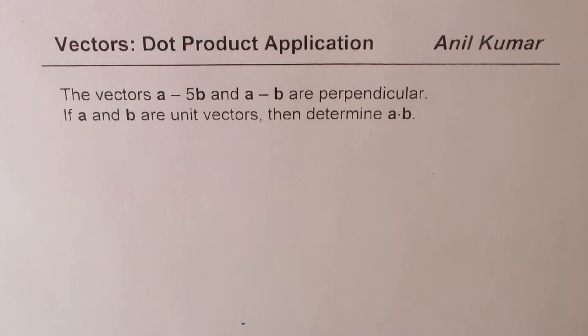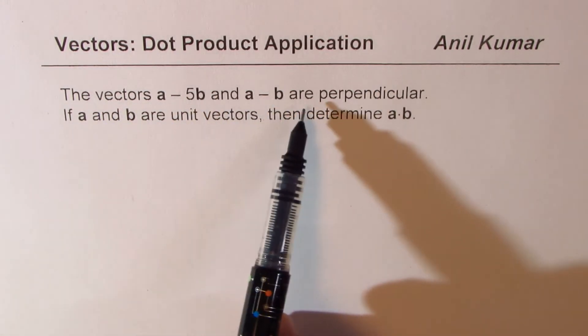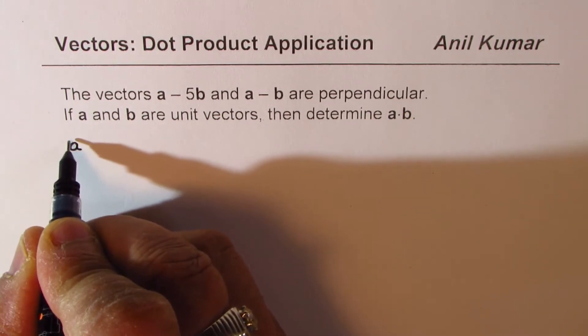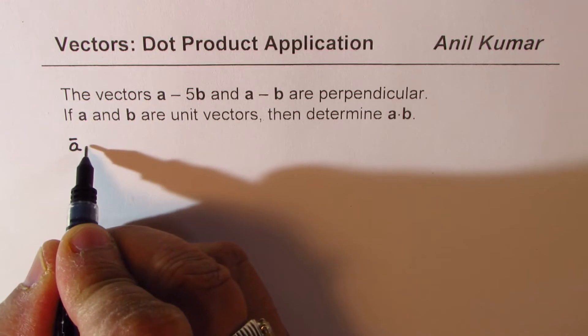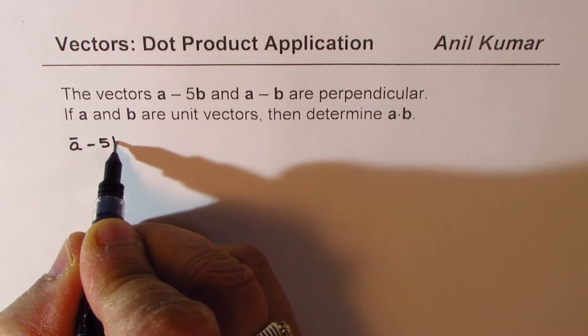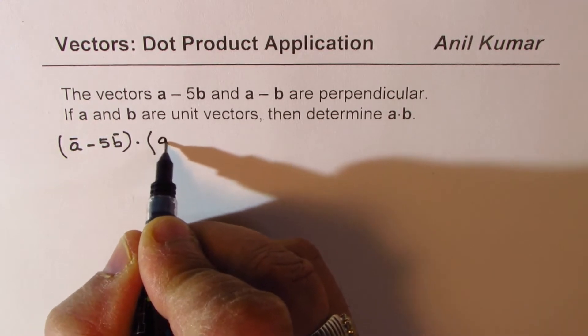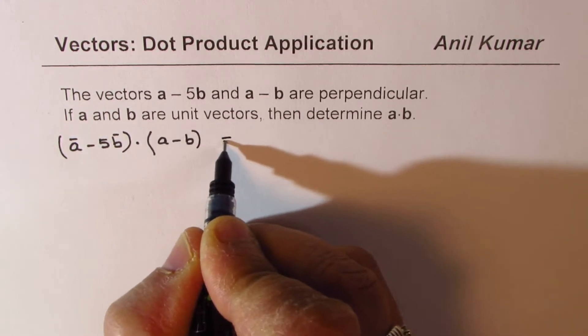Now let's try to understand what is given to us. We are saying that the two vectors are perpendicular, and that clearly means that their dot product should be 0. So A minus 5B dot A minus B should be equal to 0.